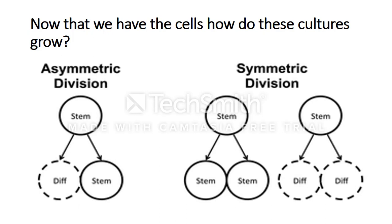A stem cell line simply refers to the full family tree of the stem cell that started. What you can do with these stem cells, once the stem cell line is created, is isolate the cells and put them into different petri dishes, modifying the environment to change them from stem cells into differentiated cells. Through manipulating the environment, you can change these stem cells into whatever differentiated cells you want, which is a pretty interesting application.